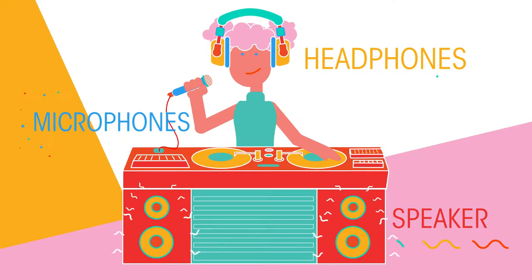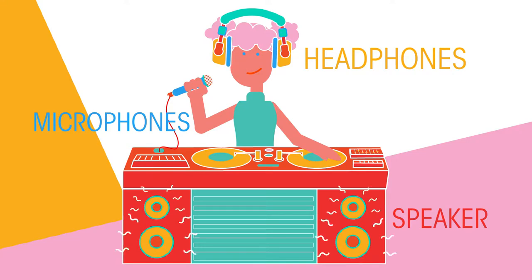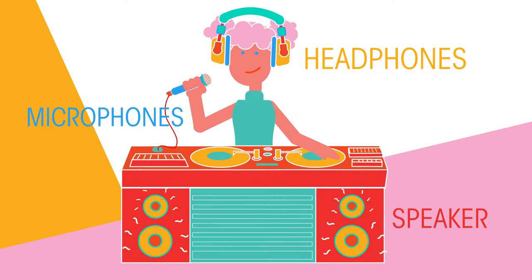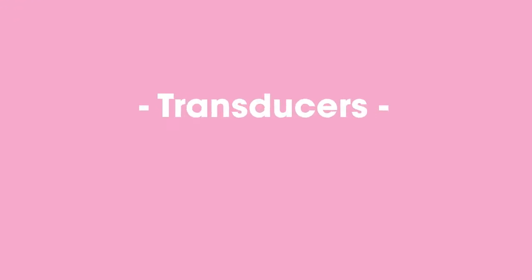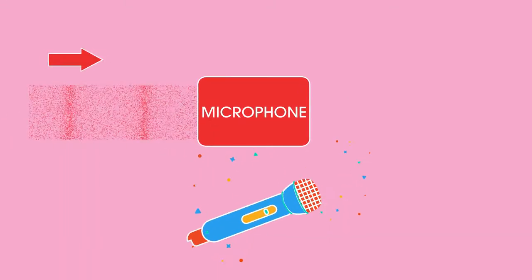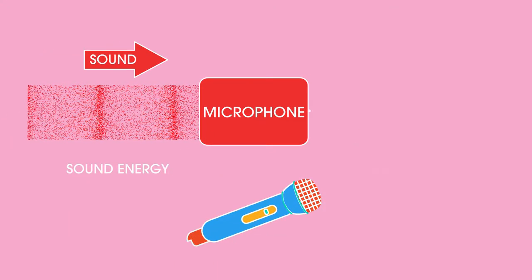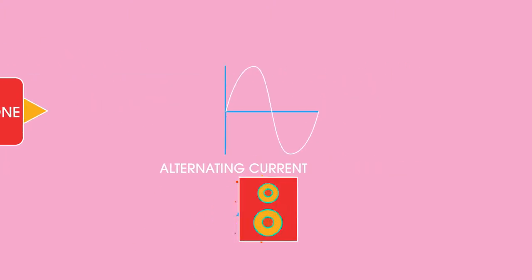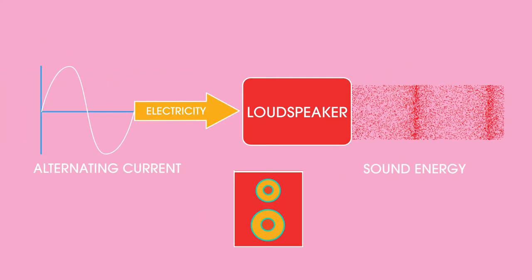The loudspeaker and microphone were both invented well over a century ago, and their basic design has changed very little since then, though they may look different today. Both are transducers, which means they change one energy type into another. A microphone transfers sound energy into electricity, and a loudspeaker transfers electricity into sound.